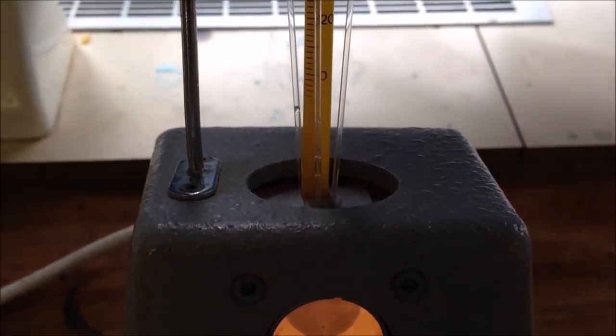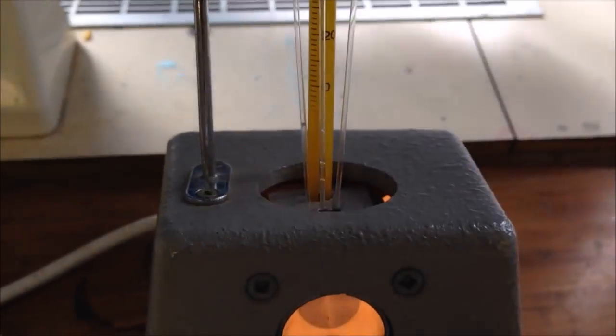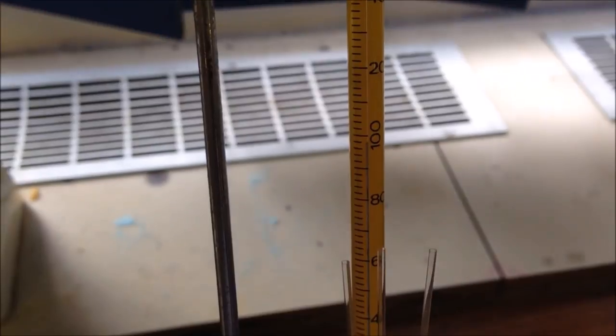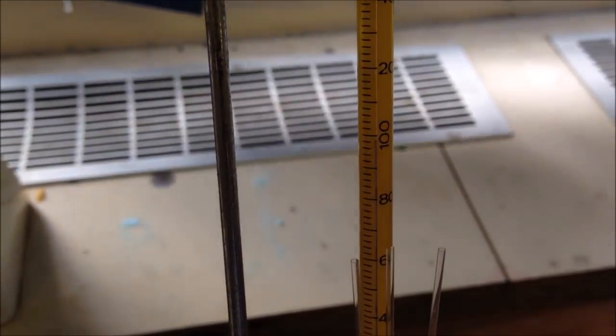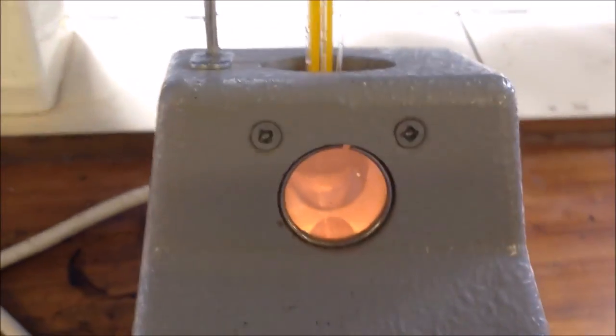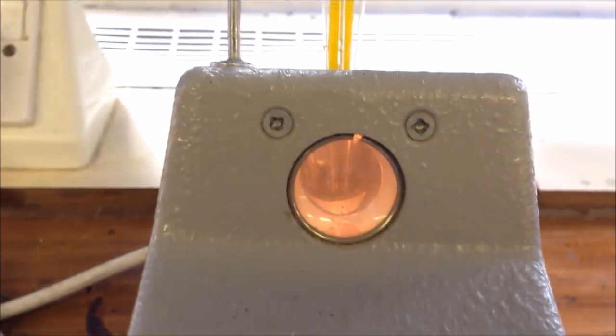So we can see here that the sample has melted and it is way below the temperature than it should be because it went at about 17 degrees and we wanted it to be between 100 and 120. So a bit of a fail for us there but you can see how the melting point apparatus works.